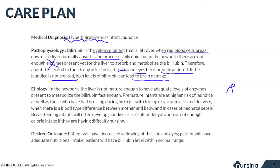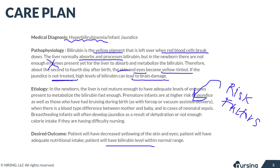There are some risk factors associated with this that can make newborns more likely to develop jaundice — we've written about a few of those here, so definitely take a second to read about those. The most important outcome for these patients is that they will have a bilirubin level within normal range, and we'll see the eyes and skin decrease in yellowness. Another really important outcome is that we maintain adequate nutritional intake and adequate hydration.